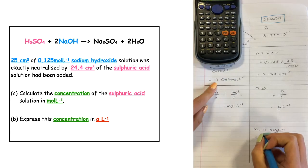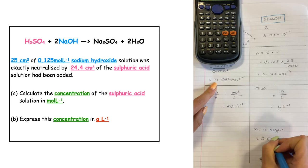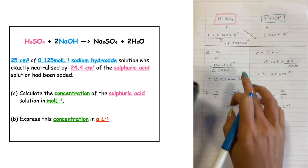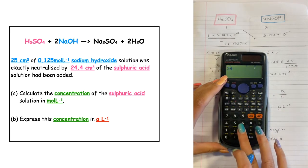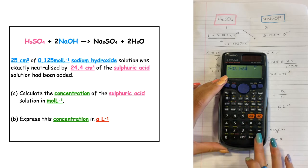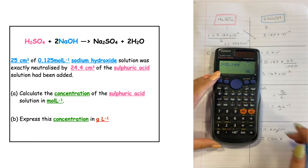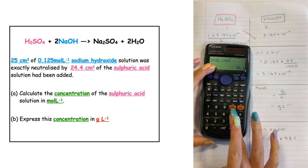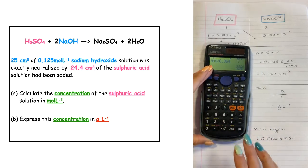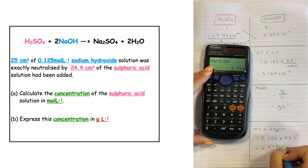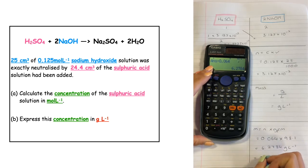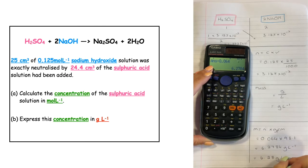The number of moles is 0.064, times by the gram formula mass of sulfuric acid. The GFM is 2 plus 32.1 plus 64, which gives us 98.1. Multiplying 98.1 by 0.064 gives 6.2784 grams per liter, which we round to 6.28 grams per liter.